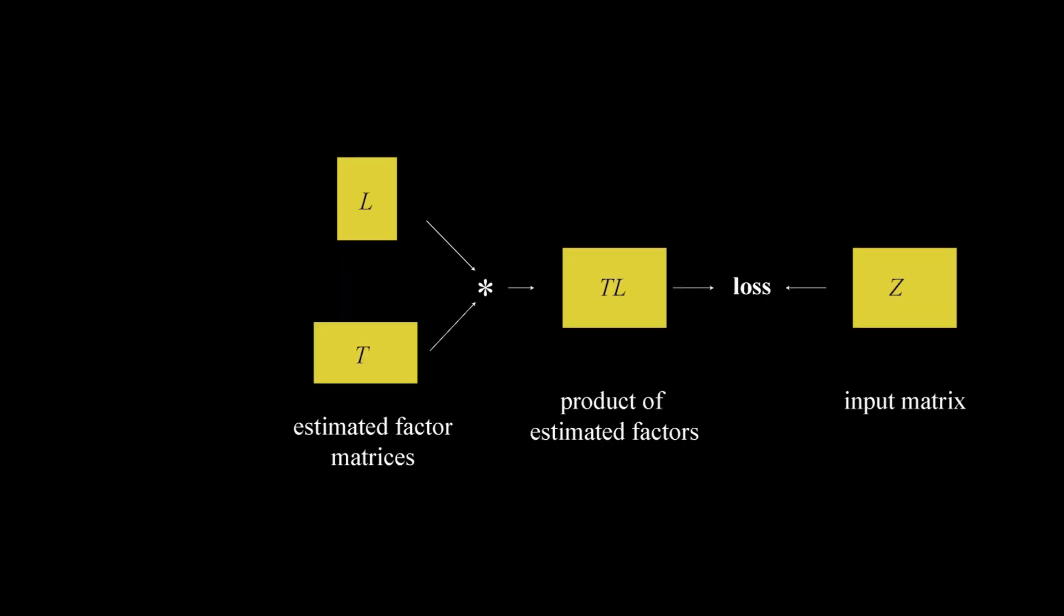The previous results rely on a measured light transport matrix T. Now, we introduce the main contribution of our paper, the case where a measured light transport is not available. Recall the light transport equation. This time, both T and L are unknown and must be estimated jointly by matrix factorization.